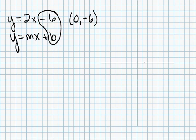So no side-to-side movement, and go down 6 — 1, 2, 3, 4, 5, 6. Make a point.